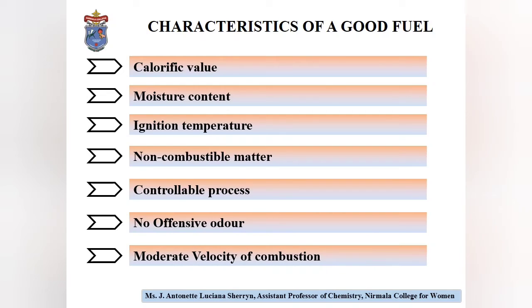The velocity of combustion. There should be a moderate velocity of combustion. In case of the velocity being very slow, the time taken to complete the process will be more. In case of high speed of combustion, there may be incomplete combustion leading to the release of toxic matter. Hence, the velocity of combustion should be moderate. These are the qualities that a good fuel should possess.